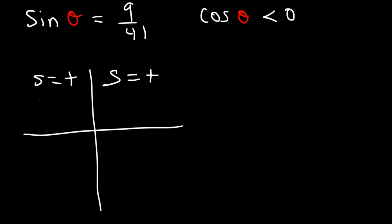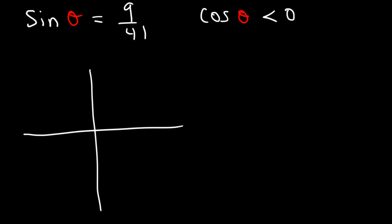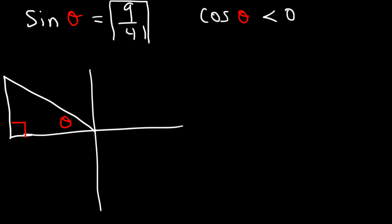Cosine is less than 0. Cosine is negative in quadrants 2 and 3. So therefore, the triangle has to be in quadrant 2. So let's draw it there. Here's the angle theta, and sine is opposite over hypotenuse. Therefore, 9 corresponds to the opposite side, and 41 is the hypotenuse of the triangle. So this is 41, and this part is 9.